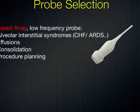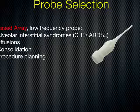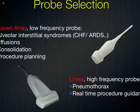There are two different probes we can use when looking at the lungs. The first is the phased array low-frequency probe, sometimes called the cardiac probe. It's a low-frequency probe which gives you high penetration but not great resolution. This is best for pulmonary edema, deeper effusions, consolidations, and procedure planning such as thoracentesis. In contrast, the linear probe is a higher frequency probe giving great detail but limited depth. We use this to evaluate the pleural line for pneumothorax and for real-time procedural guidance.